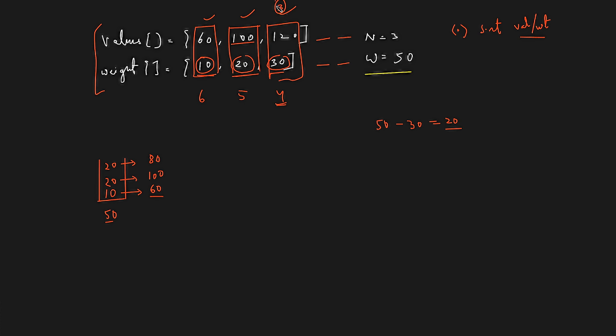There is one more thing to take care of while coding: the value per weight might be a decimal, so use double data types to avoid loss of precision. After the third item, the knapsack is filled and we stop. The variable stores the total value 240, which is our answer.